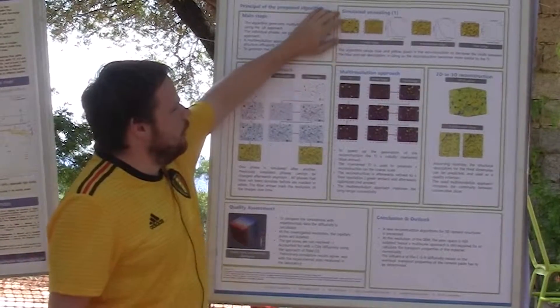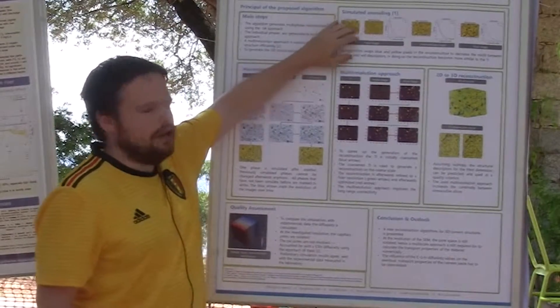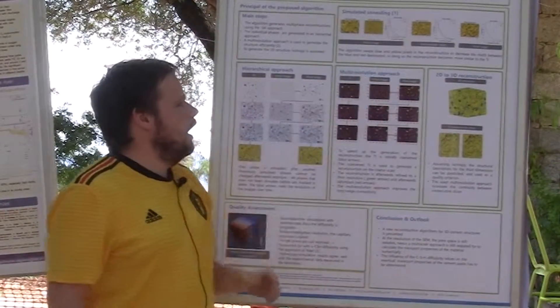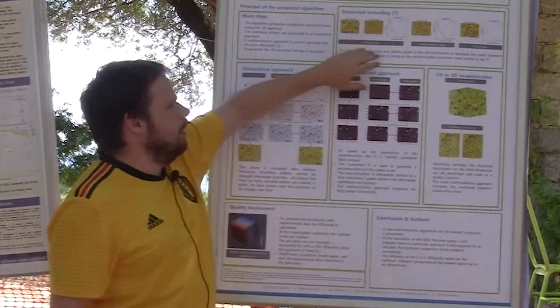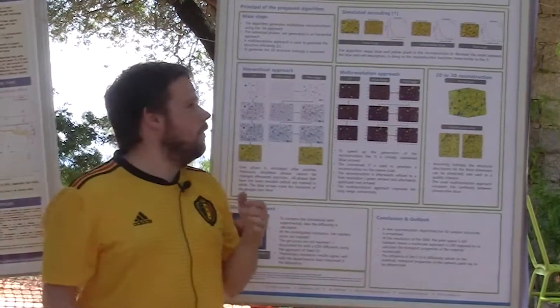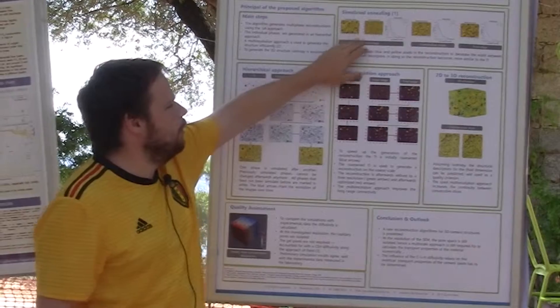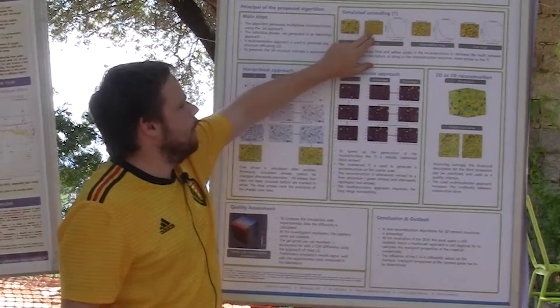The principle of the simulated annealing algorithm is that you take an image which you want to reconstruct and calculate a specific descriptor. Then afterwards, you initialize a random realization of a material which has the same phase distribution and calculate the same descriptor for this material.